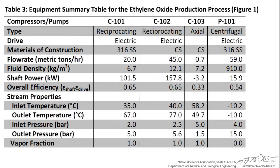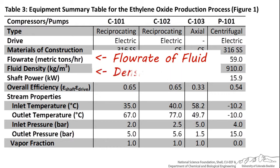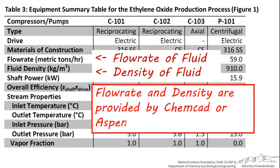Important information that should be in any compressor, turbine, or pump equipment summary table is the flow rate of the process fluid going through the equipment and its density. If you're using simulation software, both of these are provided for you on the stream table in ChemCAD or Aspen.